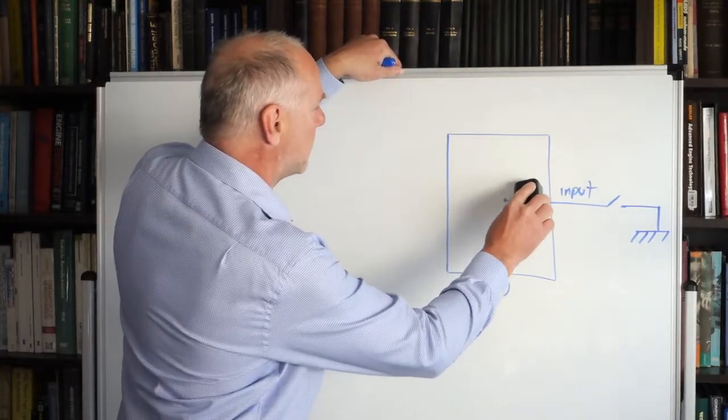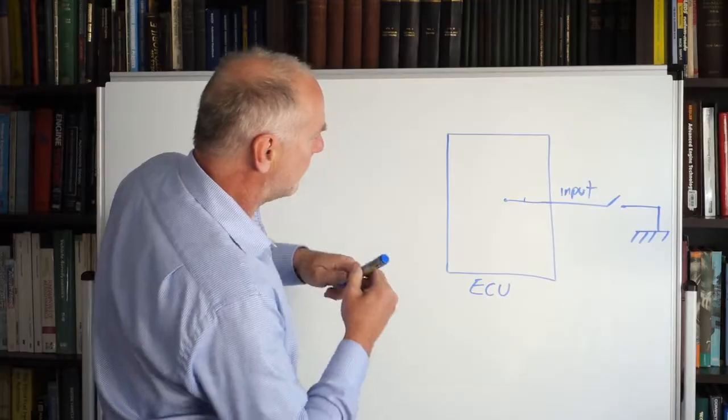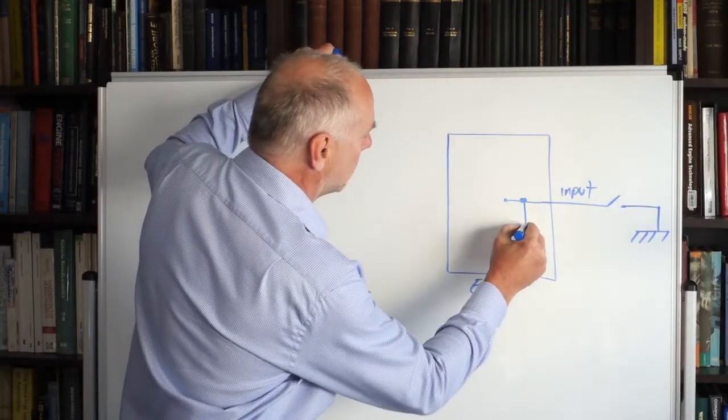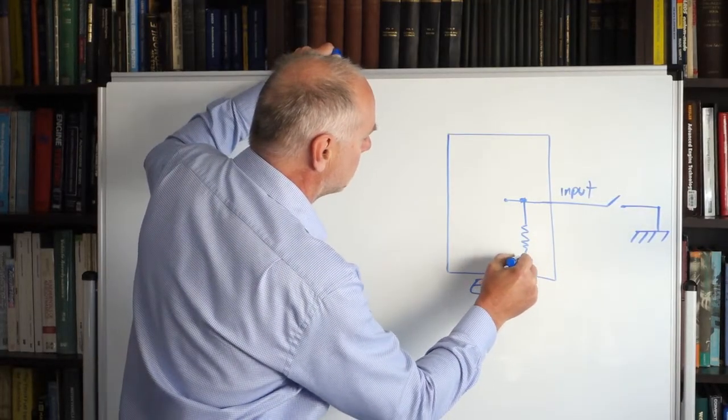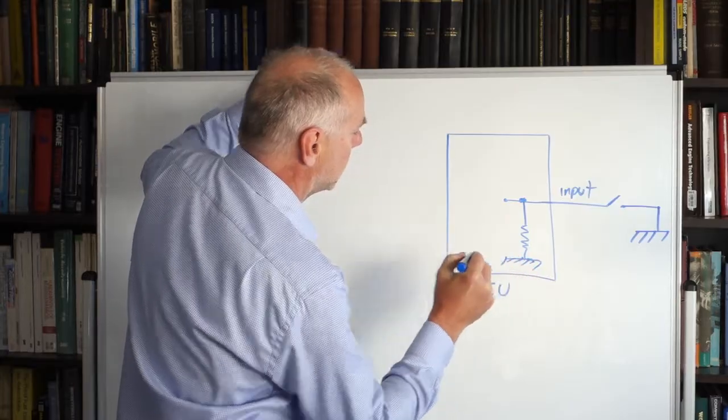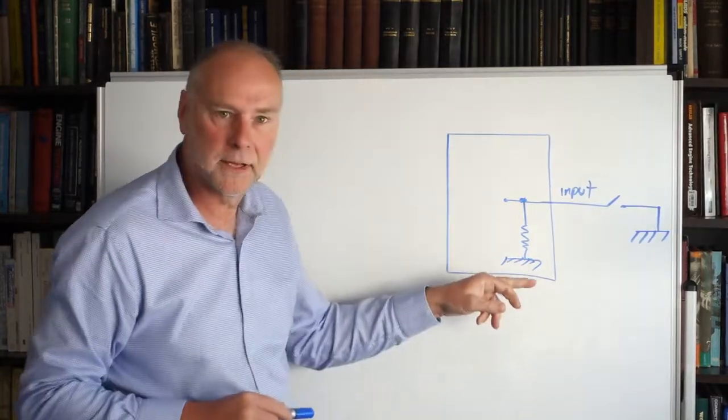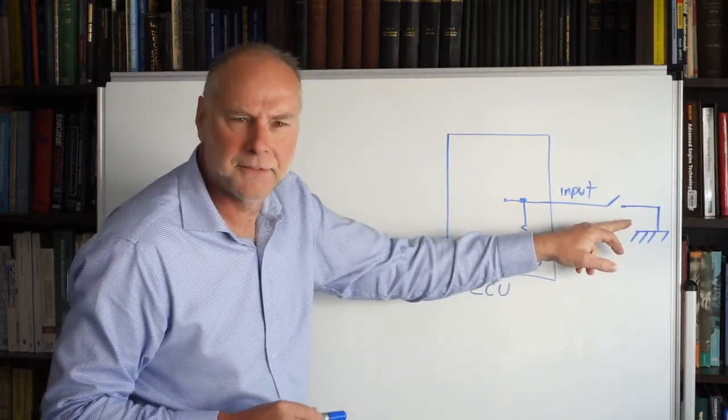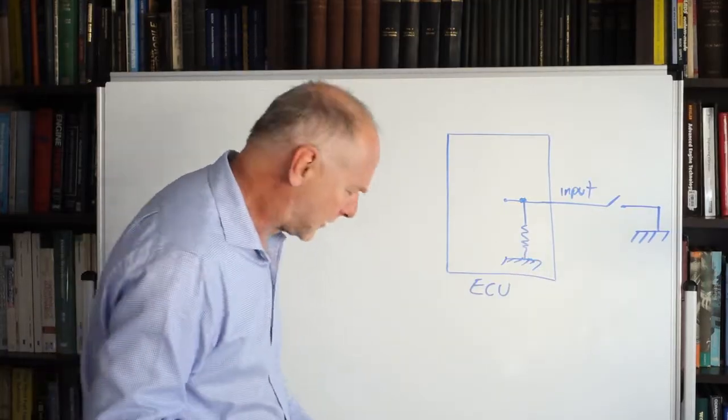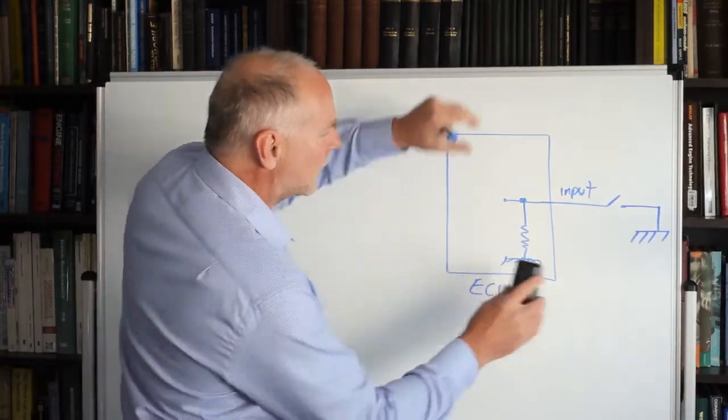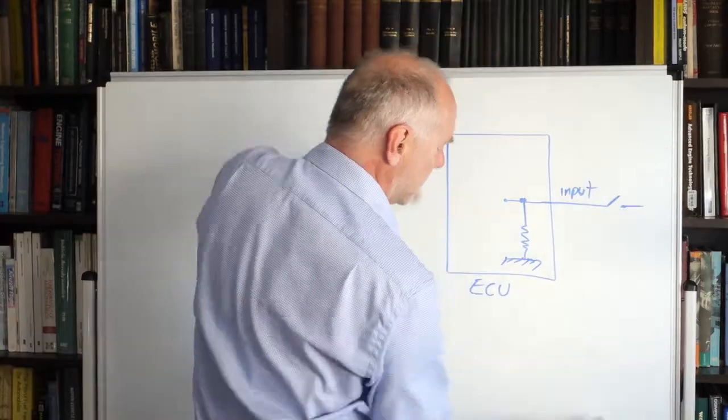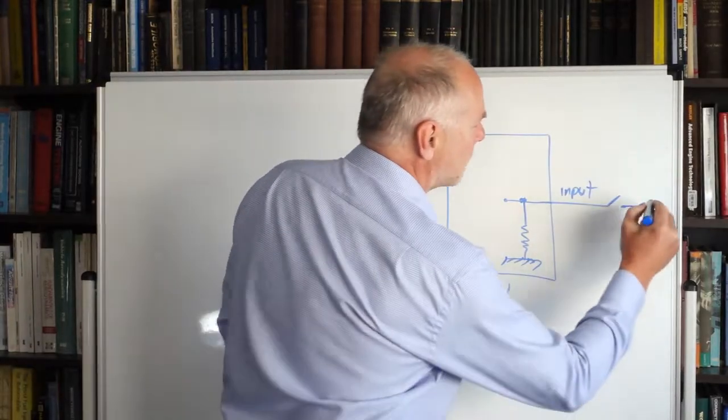So here, let's draw now a pull-down resistor. So now, we have it pulling down to ground. Now, it doesn't make sense over here anymore, does it? Because we've got ground or ground, depending on the position. So here, let's change it to being a five-volt supply.